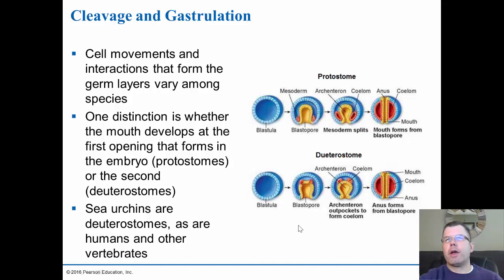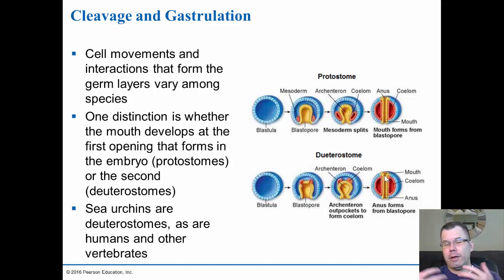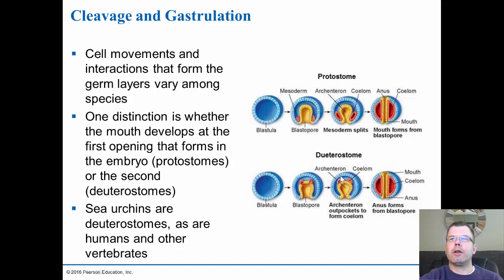The difference between the protostome and the deuterostome is what forms first. In the protostome, the mouth forms first — the blastopore will form the mouth and then the anus second. This is why in protostomes you sometimes don't have a complete digestive system, because sometimes the anus doesn't get formed — especially in things like the planaria or the jellyfish. The archenteron never reaches the other side. Whereas with the deuterostome, since you form the anus first, you're always going to have a complete digestive system because you have to form the mouth second. That's one of the advantages — you always guarantee yourself having two openings to your digestive system. Anything that's a deuterostome is anything above a starfish, and all vertebrates are deuterostomes — anus forms first, mouth forms second.